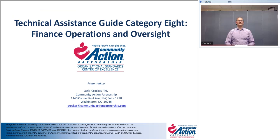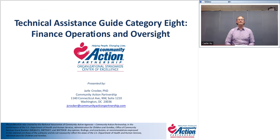Welcome, everyone. I'm going to hand it over to Jarl and Kevin. Hello, everyone, and thank you for joining us to talk about the Partnership's Technical Assistance Guide for Category 8, Financial Operations and Oversight. I'm Jarl Crocker, Director of Training and Technical Assistance at the Partnership, joined by Kevin Myron, the primary author of the Technical Assistance Guide. Kevin is a CPA, CFO of Common Bond Communities, and a board member of a community action agency.